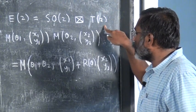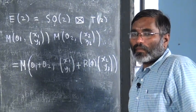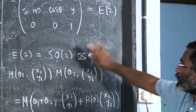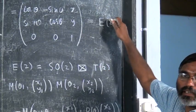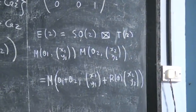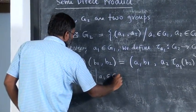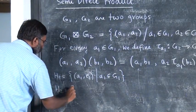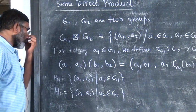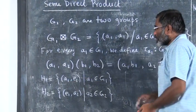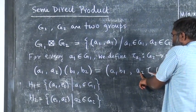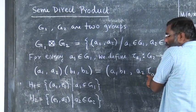So this is an example of a semi-direct product of SO(2) and translations in two dimensions. This is called the Euclidean group in two dimensions — the rotation group in two dimensions acts on the translation group in two dimensions. H2 is the set of (e1, a2) such that a2 is in G2, and τ_{a1}(e) = e2, so τ_{a1} maps the identity to the identity.